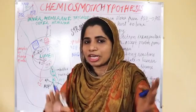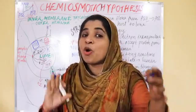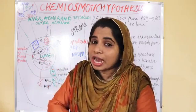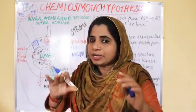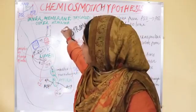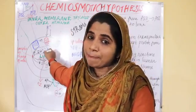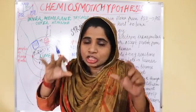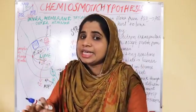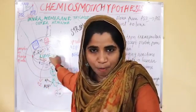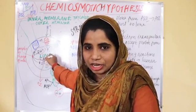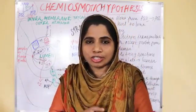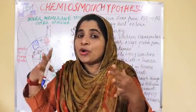What is the chemiosmotic hypothesis? There will be a proton gradient. By cytochrome action and photolysis, protons accumulate in the lumen. So there will be an increased concentration of protons in the lumen and a decreased concentration of protons in the stroma. That is the proton gradient.